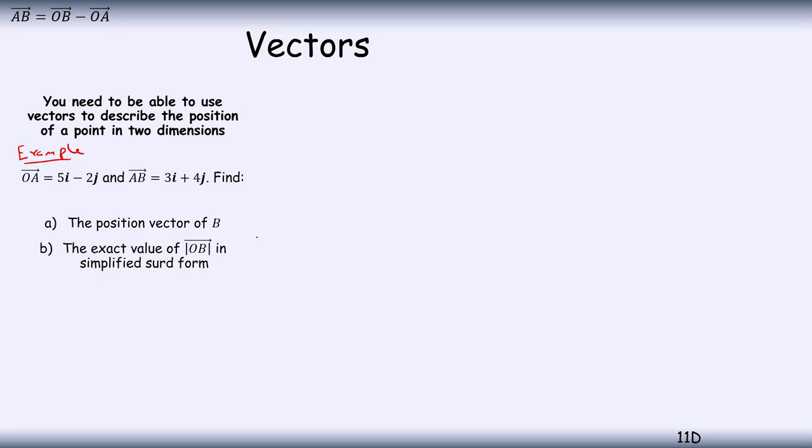Now the position vector of B is given by OB, like so. Now I know that AB is equal to OB minus OA. I know OA and I know AB, so I can use those to find OB. So I can say OB is going to be equal to, taking that over the other side, AB plus OA.